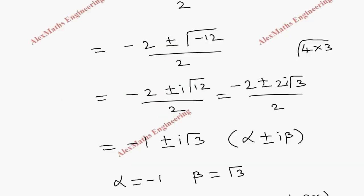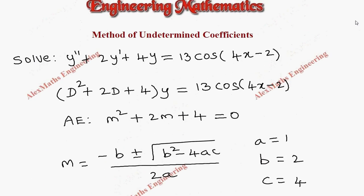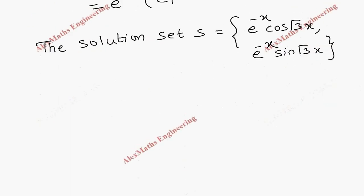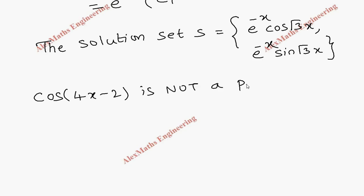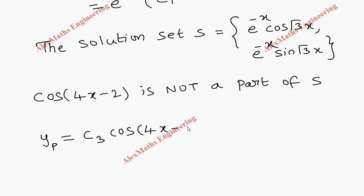The right-hand side of the equation is 13·cos(4x − 2). The term cos(4x − 2) is not a part of the solution set S. Therefore, we assume the particular integral as yp = c3·cos(4x − 2) + c4·sin(4x − 2).